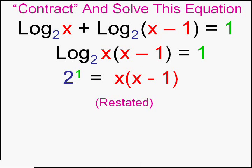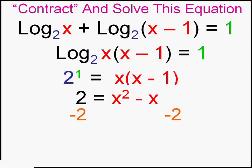Two to the 1st, the base of 2 and the exponent or logarithm of 1, equals the expression x times the quantity x minus 1. Now I can solve it. Two to the 1st is two, and x squared minus x turns this into a quadratic equation, which I can solve if I get zero on one side.